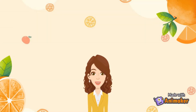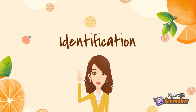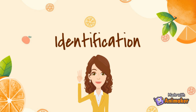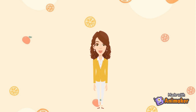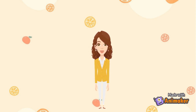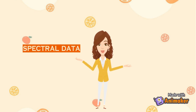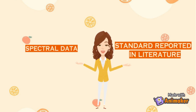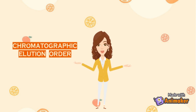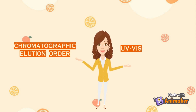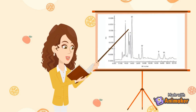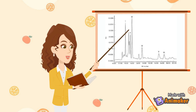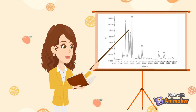The last step of analysis is the identification of carotenoids in orange juice. At this step, the identification of orange juice carotenoids has been mainly carried out by comparison of the spectral data obtained with the standards reported in the literature, chromatographic elution order, UV-VIS spectroscopy, and mass spectral characteristics. The tendency of carotenoid identification was by considering the location of the absorption maxima with the highest peak.